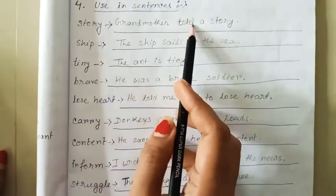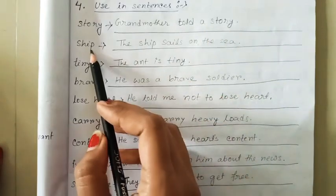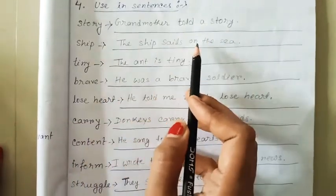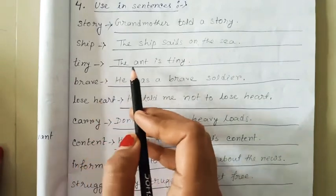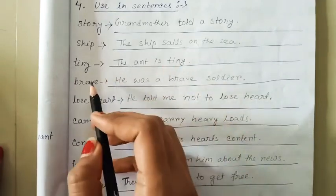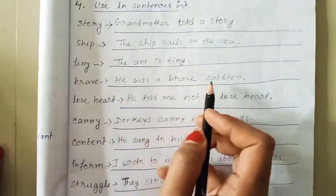Story: Grandmother told a story. Sheep: The sheep sails on the sea. Tiny: The ant is tiny. Brave: He was a brave soldier.